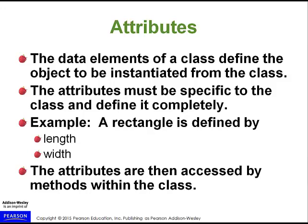On page 133, look at Figure 3-5 — the UML diagram of the Rectangle class. The name of the class is Rectangle. It has two fields: length and width. Everything below those are methods: setLength, setWidth, getLength, getWidth, and getArea. The 'set' writes and the 'get' reads.